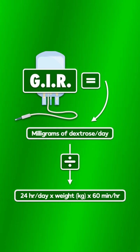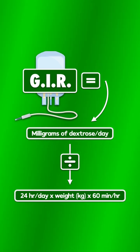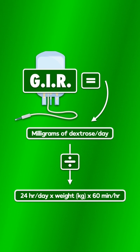To obtain the glucose infusion rate, you take the mg of dextrose provided per day and divide it by 24 hours per day times the patient's weight in kg times 60 minutes per hour.